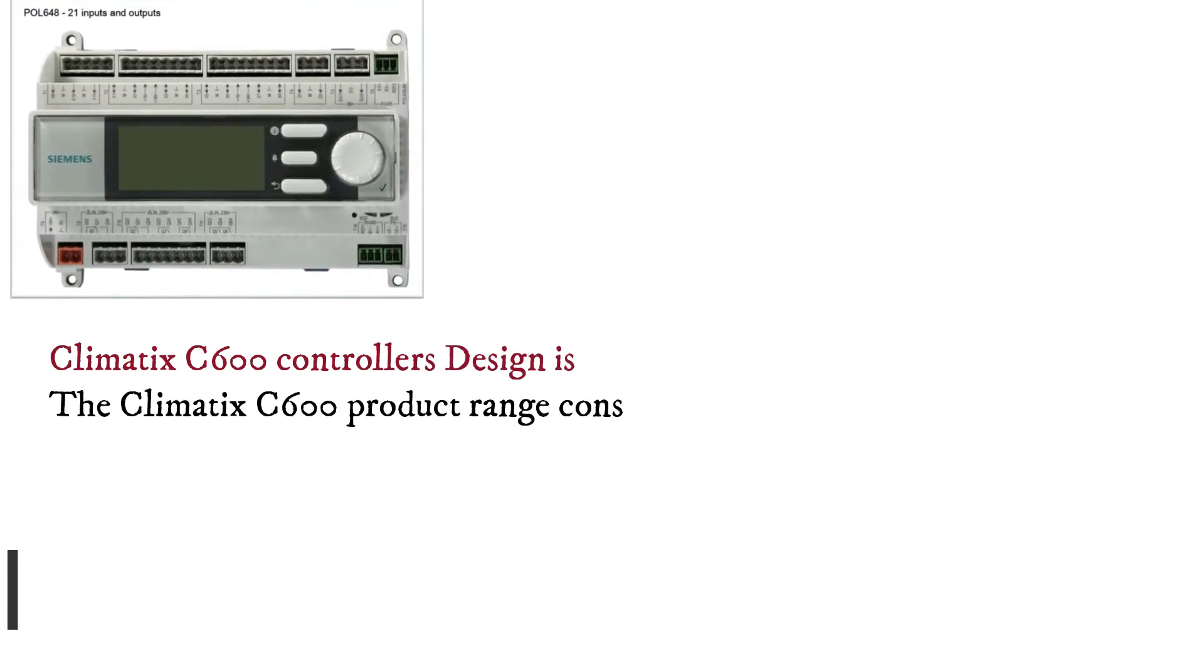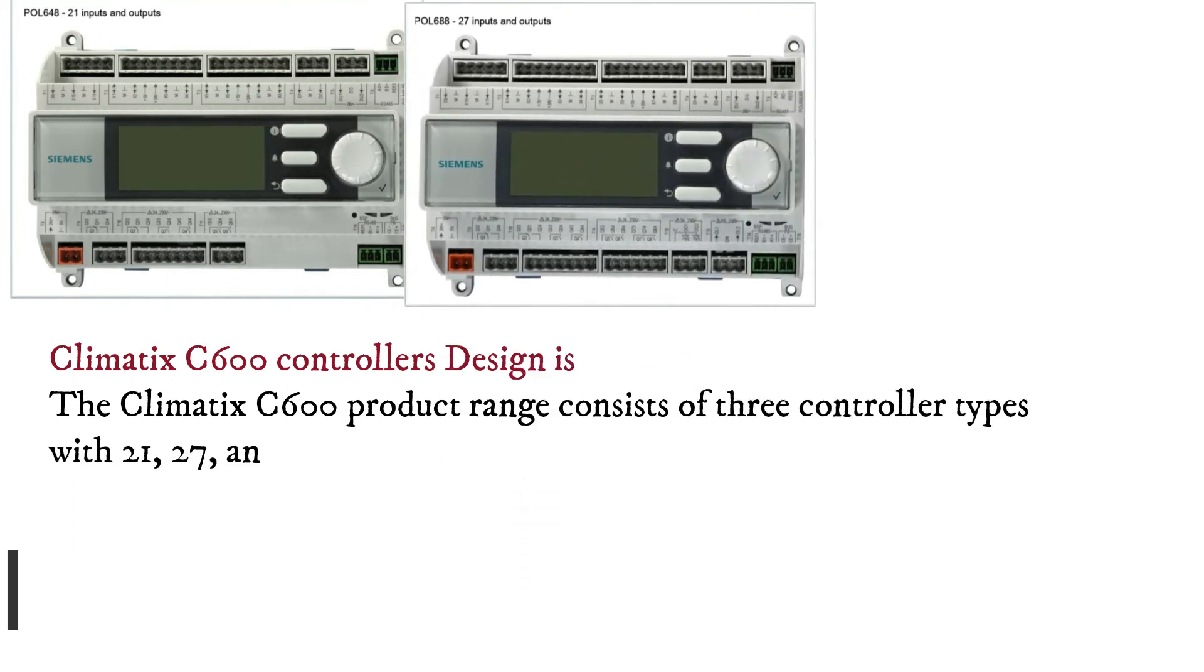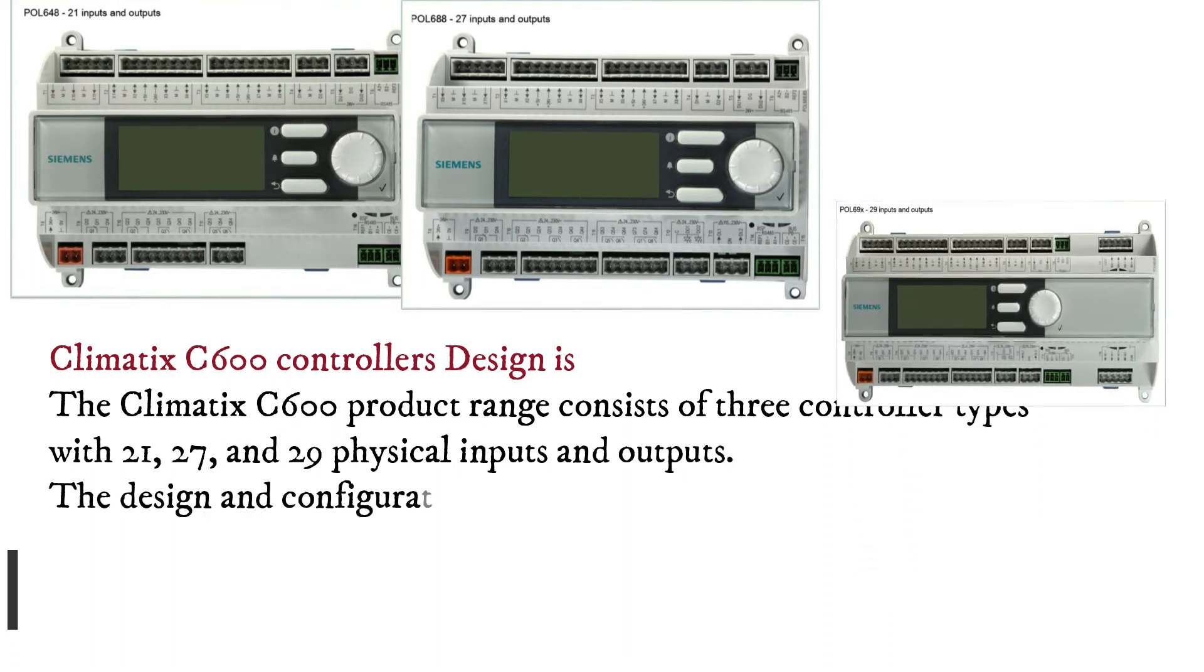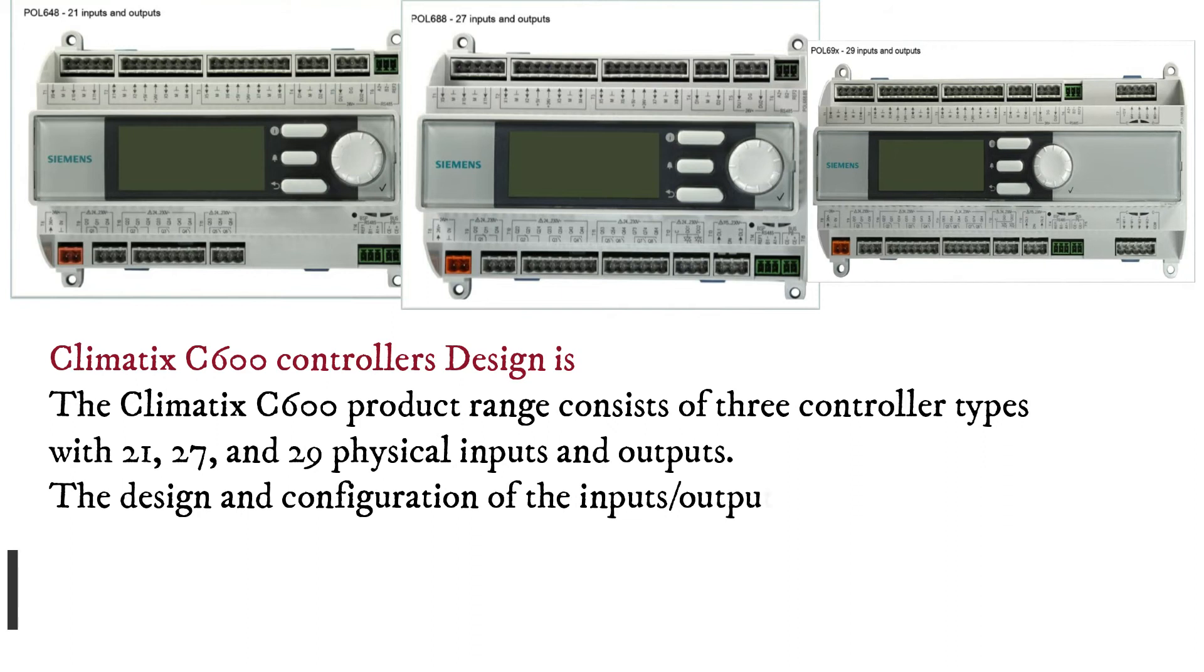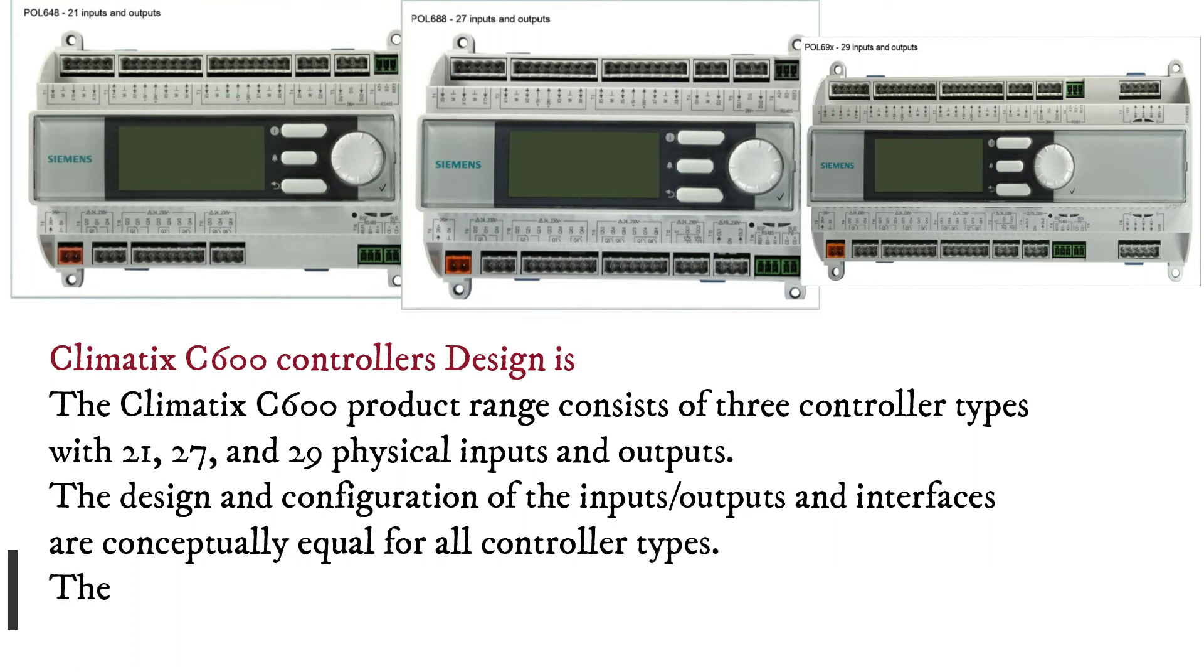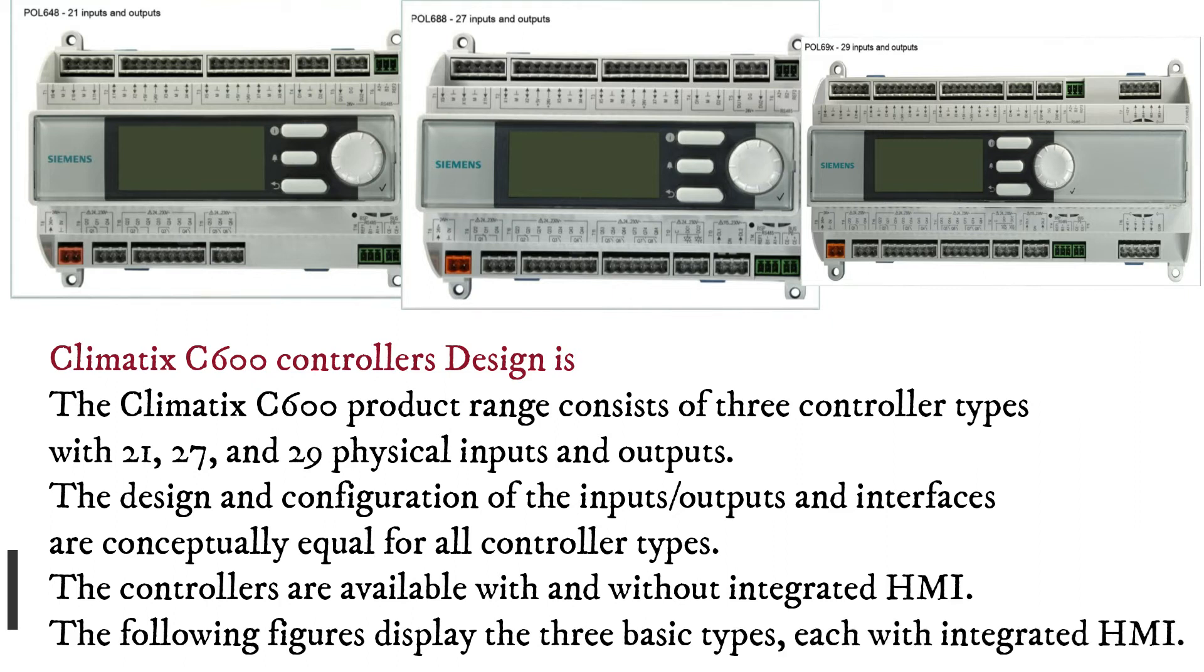Climatix C600 controllers design: The Climatix C600 product range consists of three controller types with 21, 27, and 29 physical inputs and outputs. The design and configuration of the inputs, outputs and interfaces are conceptually equal for all controller types. The controllers are available with and without integrated HMI.